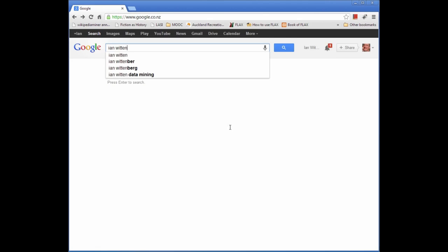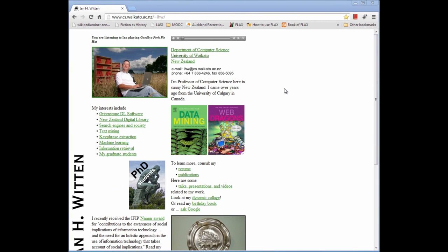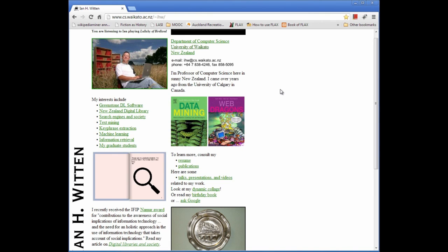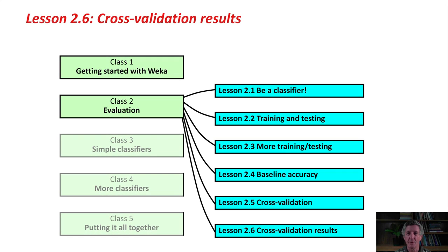You'll get me here. Every time you visit this page, I'll play you a tune. Yes, that's what I do. Anyway, that's not what we're here for. We're here to talk about lesson 2.6, which is about cross-validation results.